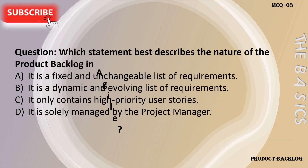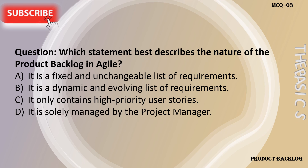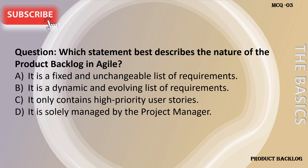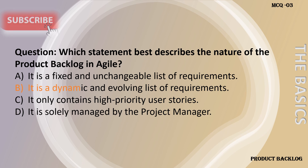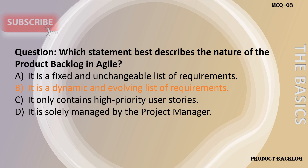Which statement best describes the nature of the product backlog in Agile? A. It is a fixed and unchangeable list of requirements. B. It is a dynamic and evolving list of requirements. C. It only contains high priority user stories. D. It is solely managed by the project manager. The answer is B: it is a dynamic and evolving list of requirements.